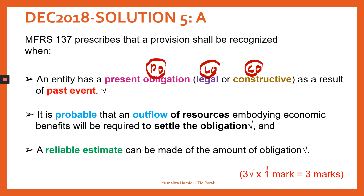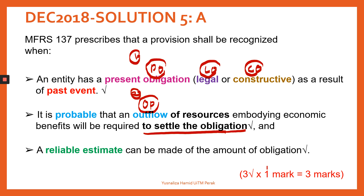The second criterion is that there is a probable outflow of future economic benefits that will be required to settle the obligation. The third criterion is that a reliable estimate can be made on the amount of the obligation — the obligation that we need to discharge to the third party or whoever is being affected.